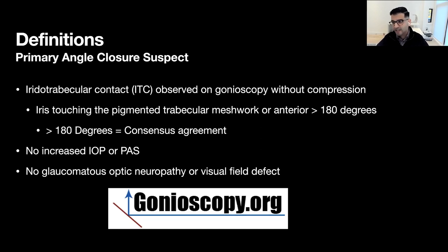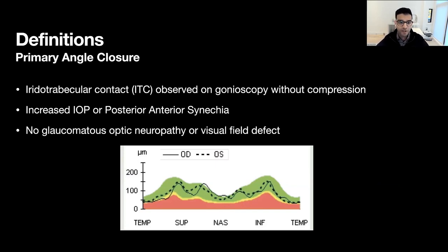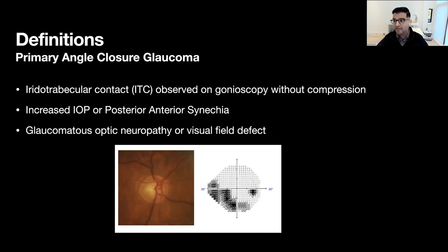Moving on to level two: if the patient has 180 degrees of iridotrabecular contact but there is either increased IOP or some posterior anterior synechiae, we use the term primary angle closure (PAC). These patients, like PACS, still do not have any formal glaucomatous optic neuropathy or formal visual field defect. Finally, level three: if all previous conditions are met and the patient shows signs of an optic neuropathy and/or characteristic glaucomatous visual change, we use the term primary angle closure glaucoma (PACG).